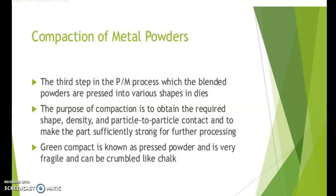Let us discuss about the next operation, which is known as compaction of metal powder — or in short, compacting, or in some books also written as briquetting. Compacting or briquetting is the process of converting loose powder into a green compact of accurately defined size and shape. The compacting stage is carried out generally at room temperature in a die by using a die set upon a press machine.